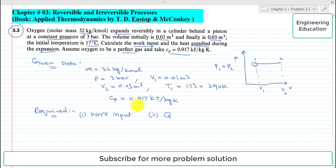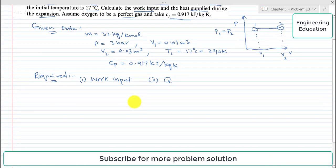To find the work input for this process from 1 to 2, as it is isobaric process, we can write the work expression for constant pressure process. This W is equal to, W from 1 to 2 is equal to P into V2 minus V1. Minus sign will be here by default as we have discussed in chapter 1.1 problems.